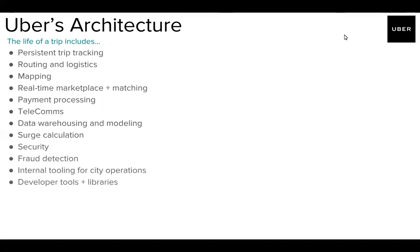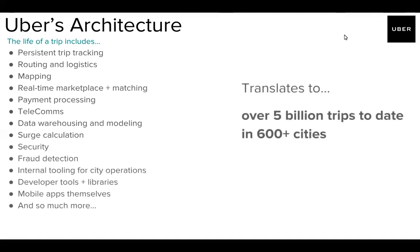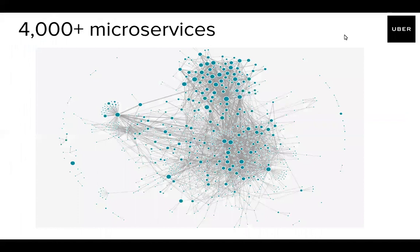We also have developer tools and libraries that help contribute to a larger ecosystem of things that work well, and then the mobile apps themselves — so the Uber app, Uber Eats, anything like that — and that all translates altogether to over 5 billion trips to date in over 600 cities. You can imagine there are hundreds of thousands of trips being taken every minute all around the world, and altogether it kind of looks like this.